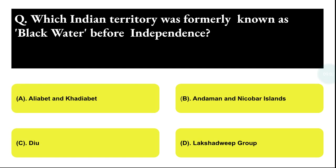Next question: which Indian territory was formerly known as Black Water before independence? Option A: Aliabet and Gadiabet, Option B: Andaman and Nicobar Island, Option C: Diu, Option D: Lakshadweep Group. The correct answer is option B, that is Andaman and Nicobar Island.